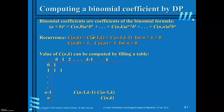Whenever you apply this recurrence relation for some instance of the problem, it results in overlapping subproblems. Dynamic programming is most suitable for recurrences with overlapping subproblems, so the binomial coefficient can be solved using a dynamic programming approach.